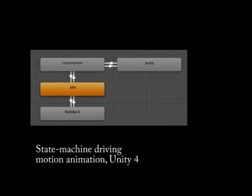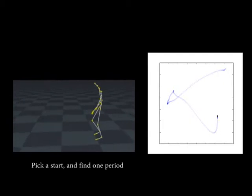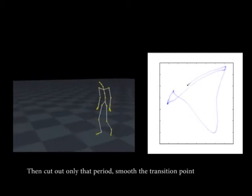The state of the art, as found implemented in Unity 4, requires the animator to pick out appropriate start and end frames and smooths the transitions between them.